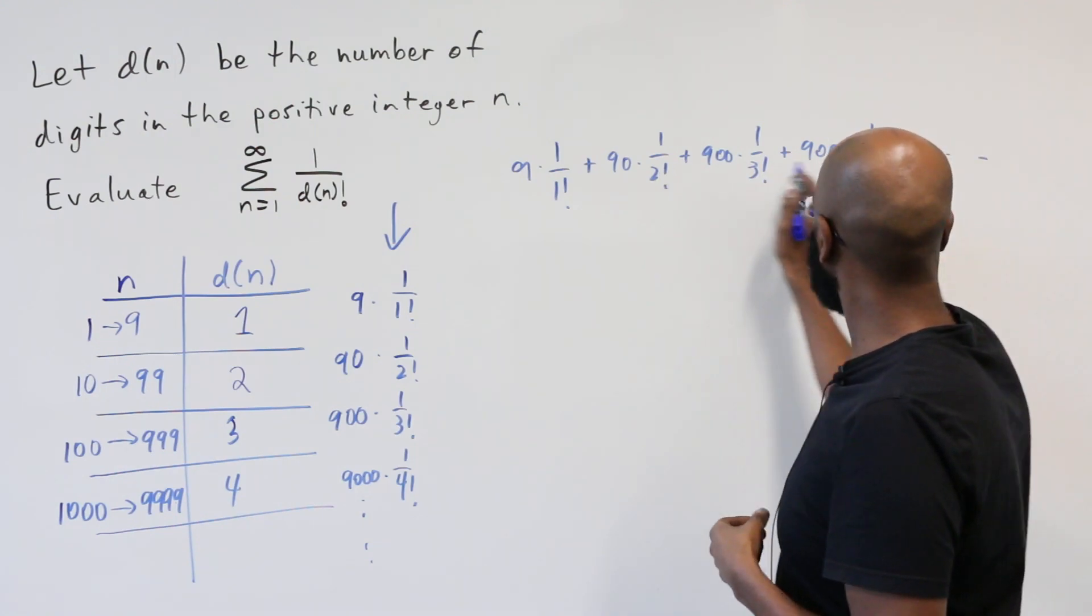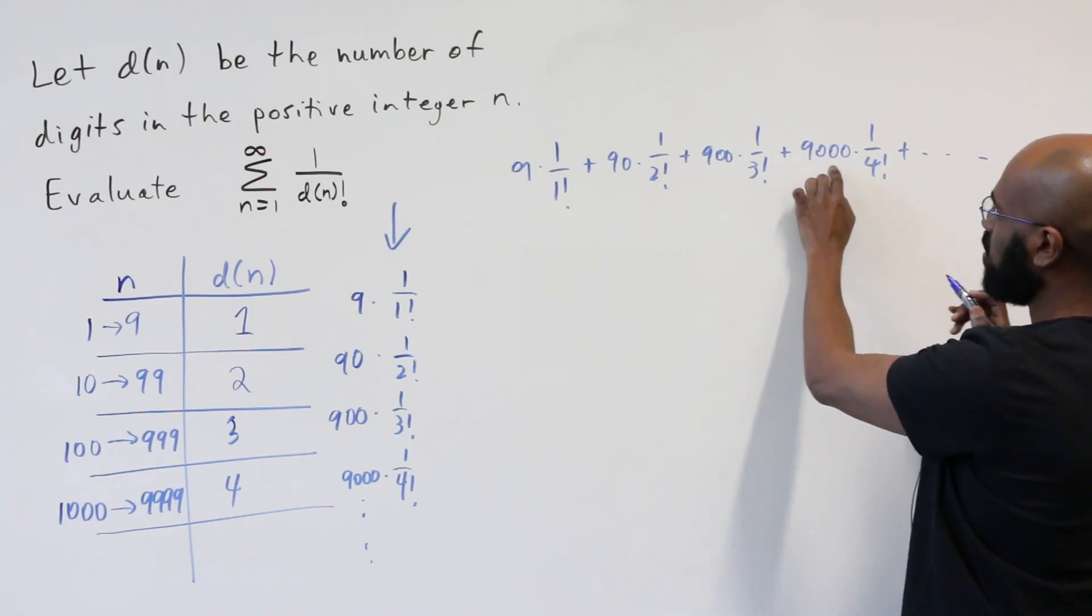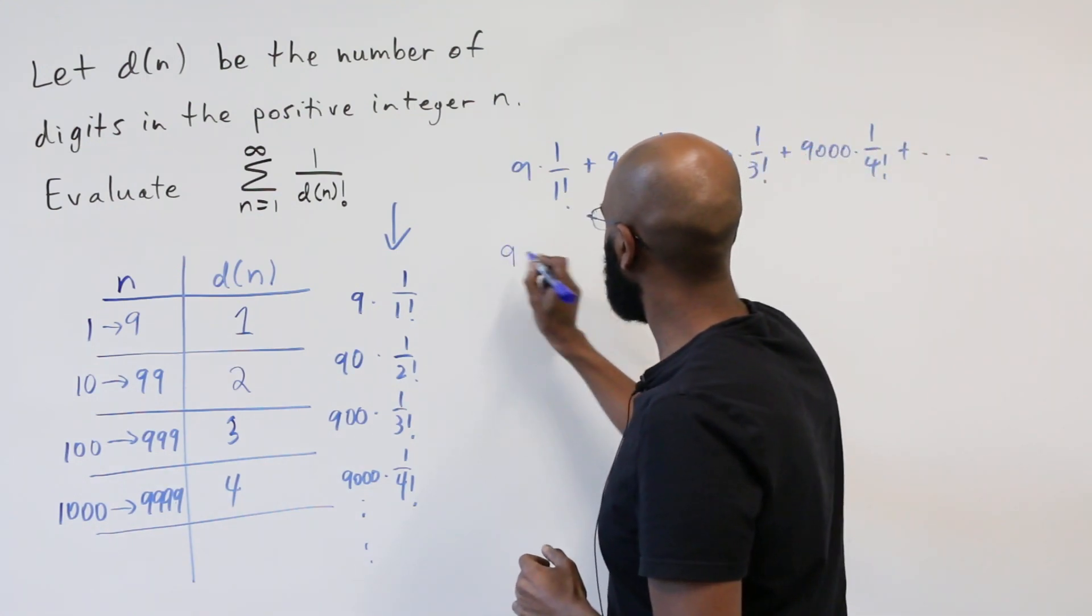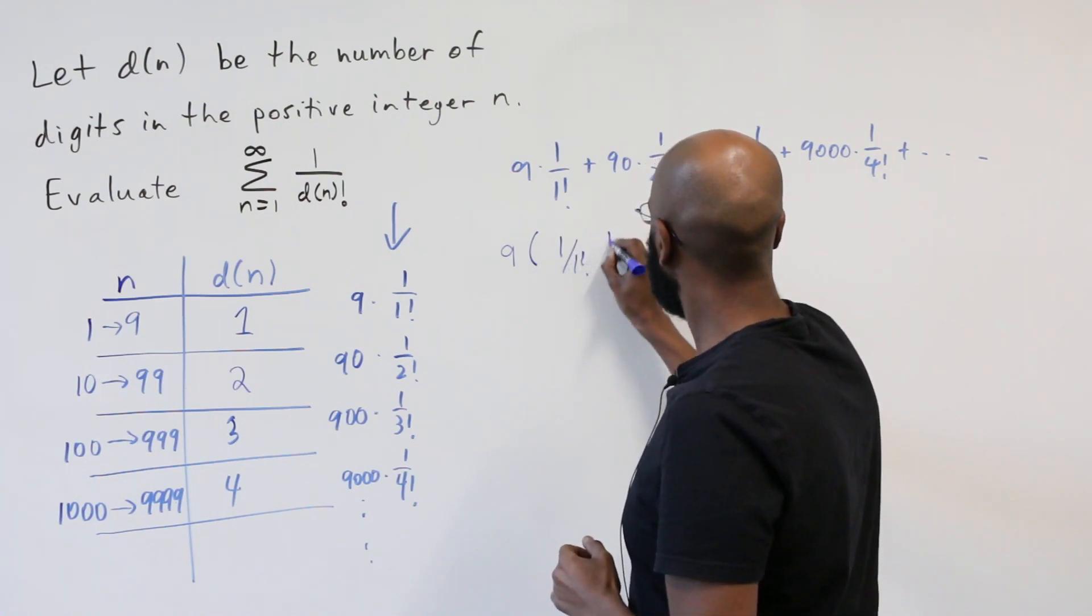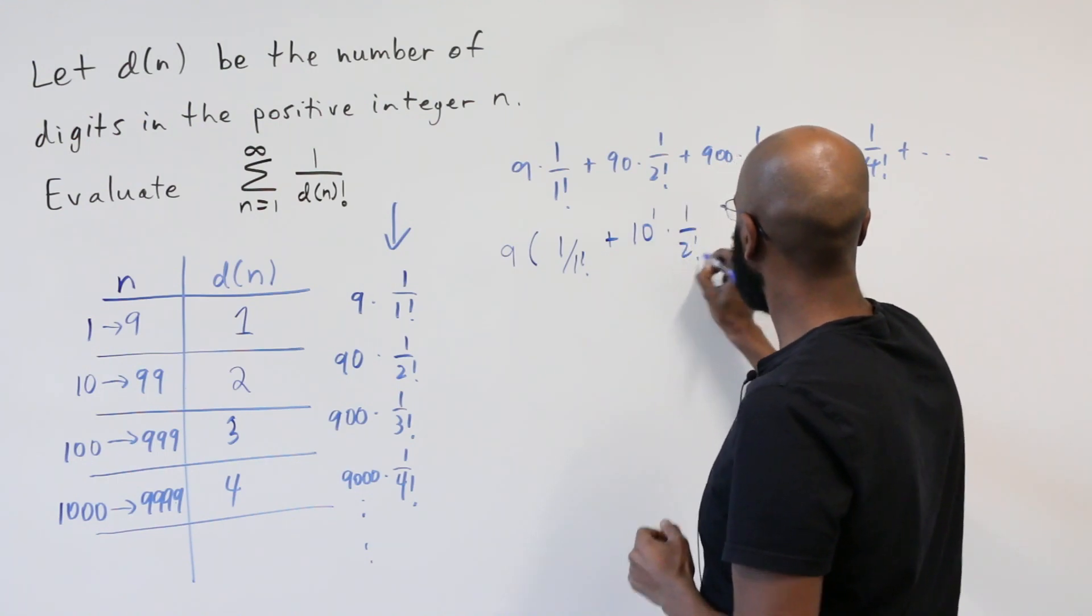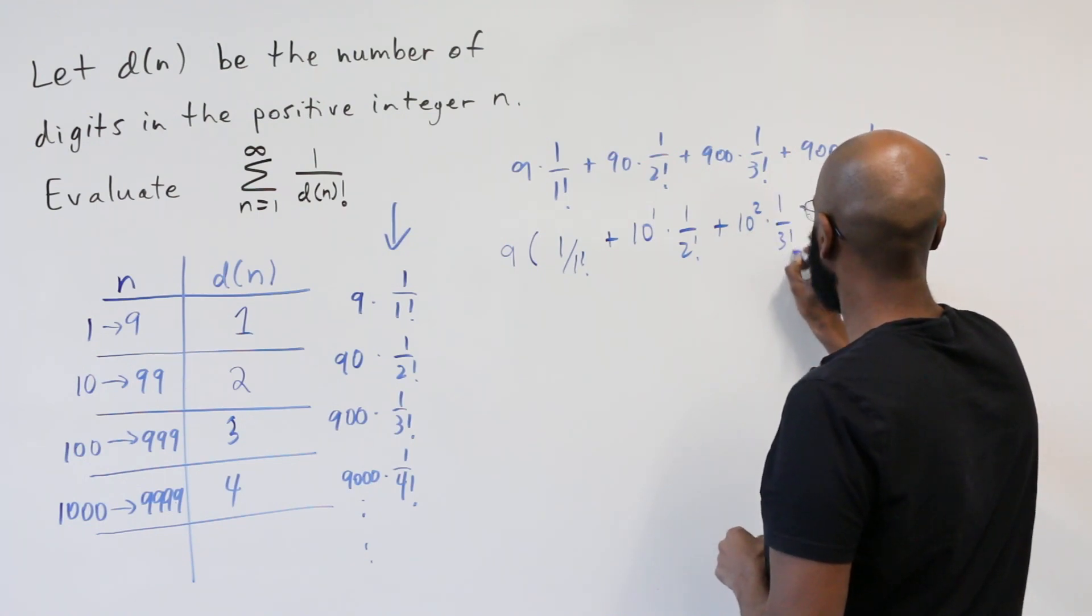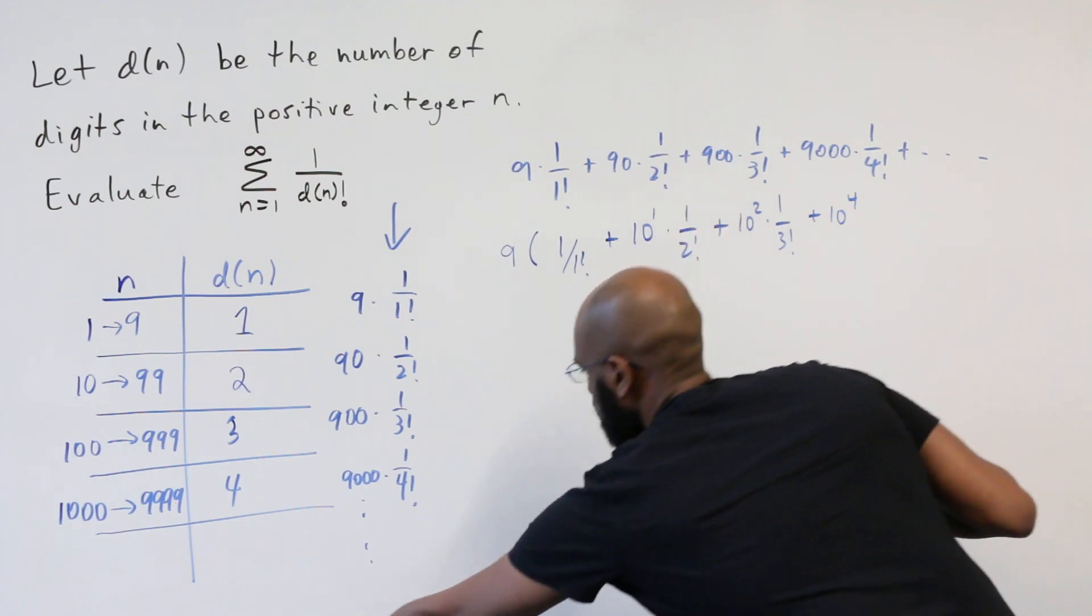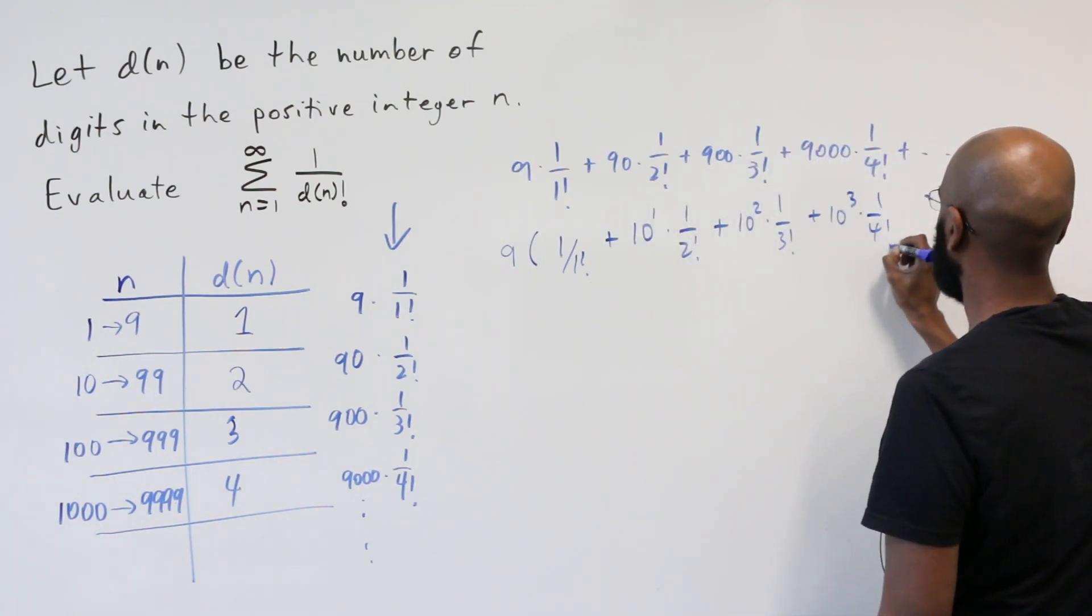So first of all, we can think about rewriting these. We'll notice that we have powers of 10 that are appearing as factors here. So we'll factor out the 9 first of all, and then we'll get 1 over 1 factorial, plus here we'll have 10 to the 1 times 1 over 2 factorial, and then here we have 100, which is 10 to the 2 times 1 over 3 factorial, plus 10 to the 3 times 1 over 4 factorial, etc.